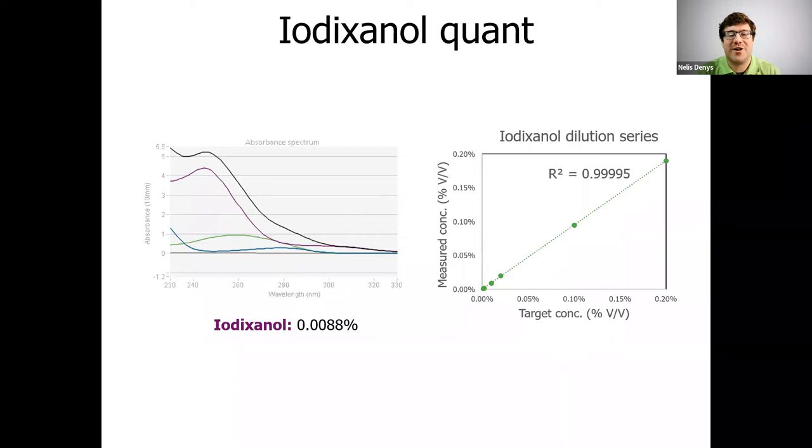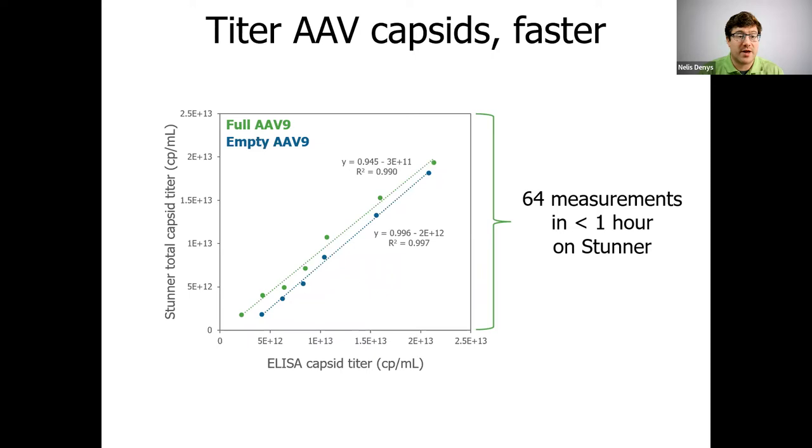Comparing to other techniques, for example, for getting capsid titer, Stunner is way faster and requires less upfront work than ELISAs. Here we've taken empty AAV9 and full AAV9 and ran dilution series on both, and we're comparing Stunner's total capsid titer versus the results of a capsid ELISA. You can see the results have slopes close to one and R-squared values above 0.99. But more importantly, it would take hours to get this ELISA data, while Stunner has done it in less than an hour with no sample prep at all.